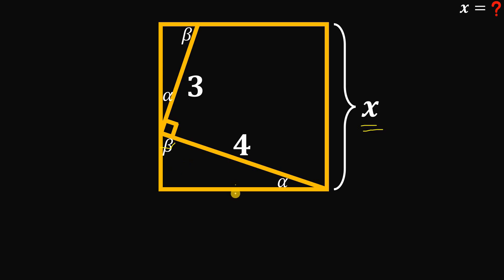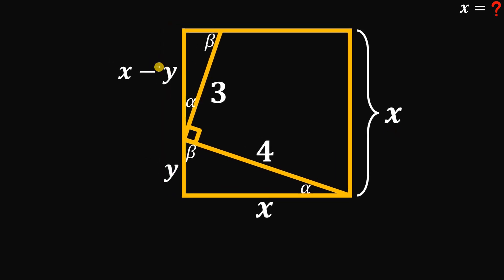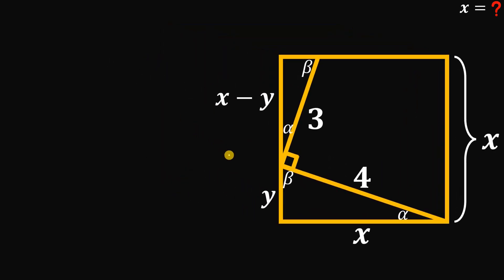Now we know the side of this square is just x. Now let's call this segment be equal to y. So this segment right over here is just x minus y. All right, now using the concept of similar triangles, we can now have the ratio of the hypotenuse to the longer leg. So we have 4/x equals 3/(x minus y).